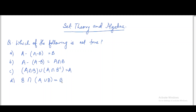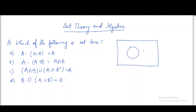For this type of question from set theory, you can use a Venn diagram to answer it. Suppose you draw a diagram where A is one circle and B is another overlapping circle, and assign some values — say 1 is only in A, 2 is only in B, 3 is in the intersection, and 4 is outside both.